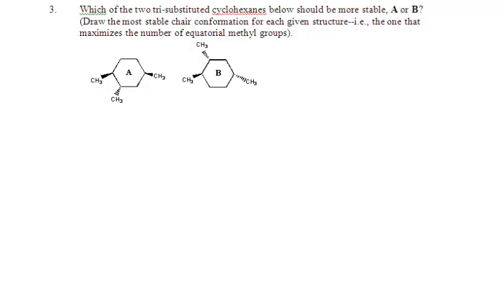Although the structures drawn show me what's up or down, it does not indicate at all what's axial or equatorial. So we need to recast these as chair conformations to be able to see if we can get all three of those methyl groups equatorial.